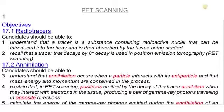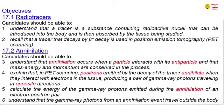Now PET scanning, before we start we are going to look at objectives. In the objectives we are going to look at radiotracers so you should be able to understand that a tracer is a substance containing radioactive nuclei that can be introduced into the body and that can be absorbed by the tissue being studied. Also recall that a tracer that decays by beta plus decay is used in positron emission tomography which is PET scanning.